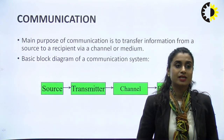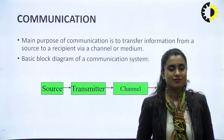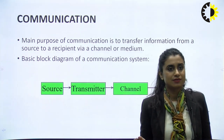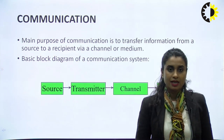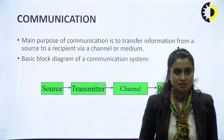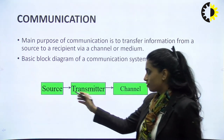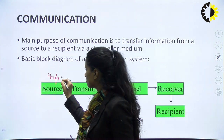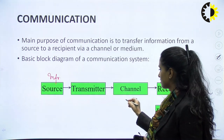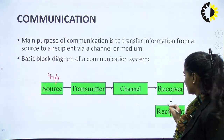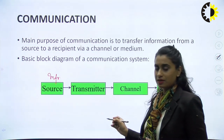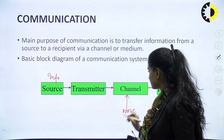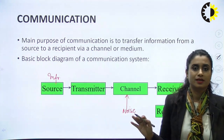Before we start with what digital modulation is, we need to understand what communication is — that is what we have been studying in the past couple of lectures. The main purpose of a communication system is to transfer information from a source to a receiver through a channel or medium. The basic blocks of a communication system include the information source, transmitter, channel, receiver, and the end destination. Most of the noise gets added in the channel.